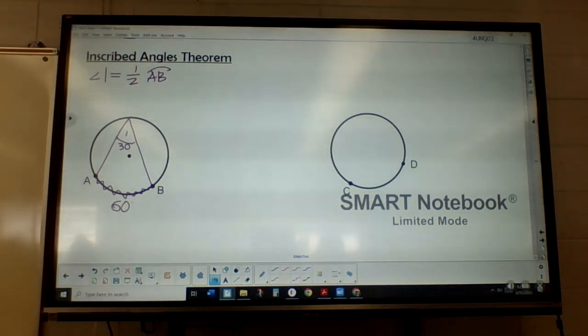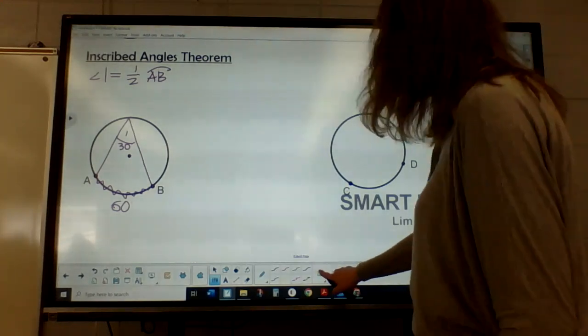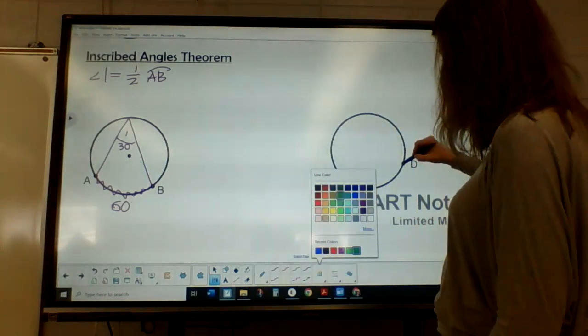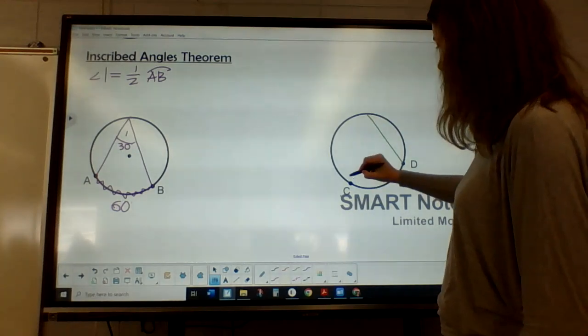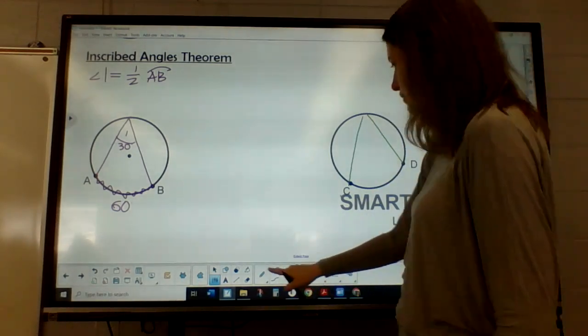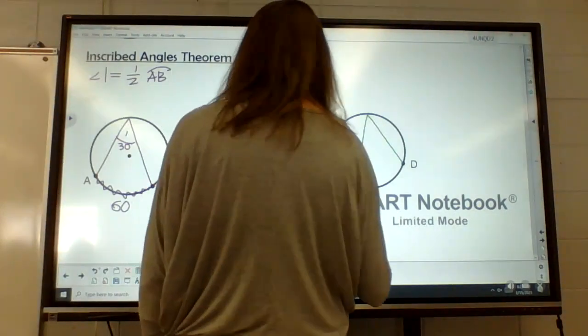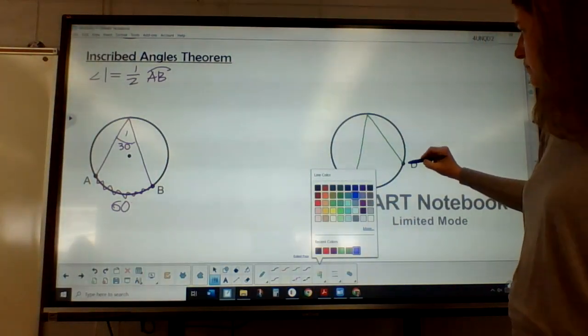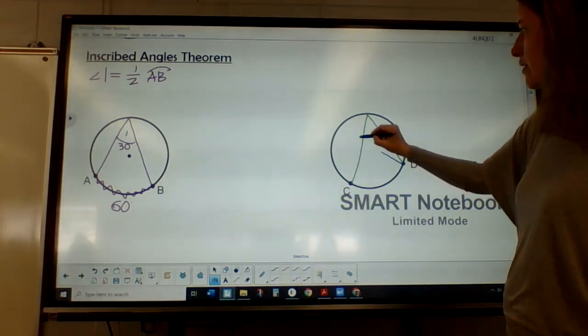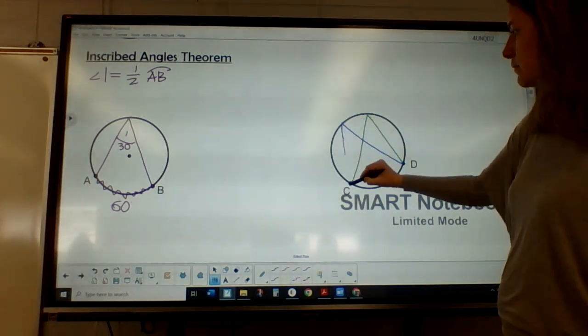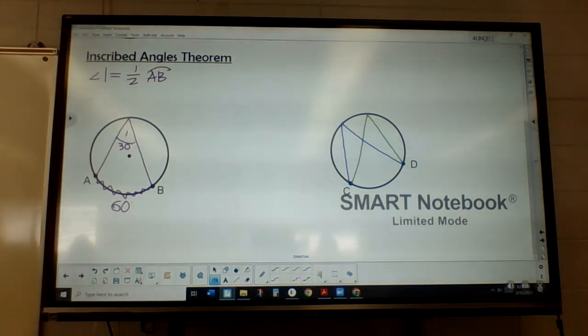All right. Our next one here is if I have two inscribed angles. So I'm going to draw two different ones here. Oops, if I could draw them connecting. That would be good. No, we don't need a middle all the time. It still can be a circle without a middle. Okay. So what I did here, guys, is I drew two inscribed angles.